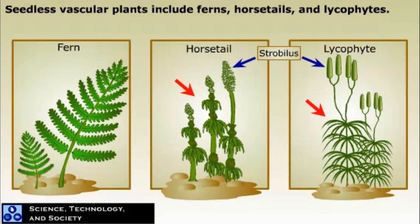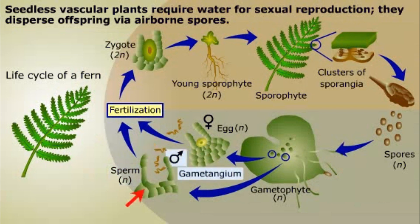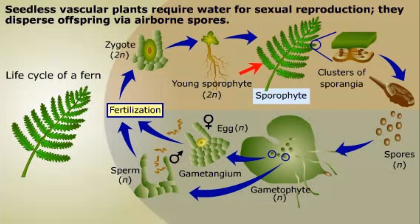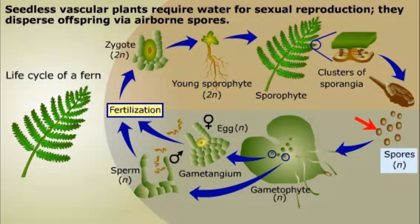Let's look at the life cycle of a fern as a representative seedless vascular plant. Like bryophytes, seedless vascular plants require liquid water for sexual reproduction. Their flagellated sperm, produced in a male gametangium, must swim to an egg in a female gametangium in order to fertilize the egg. The young sporophyte that develops from the resulting embryo takes root and grows into the dominant sporophyte. Clusters of sporangia form on some of the fronds of the sporophyte fern.